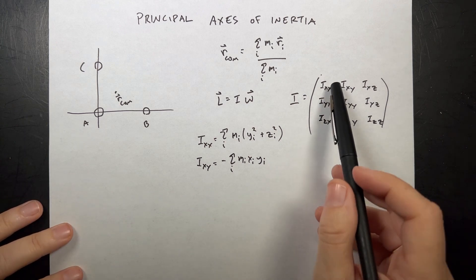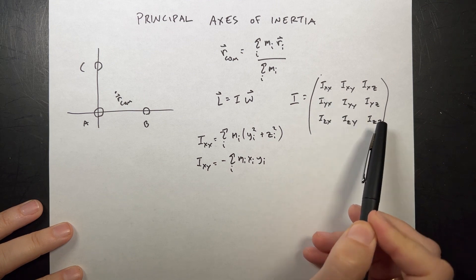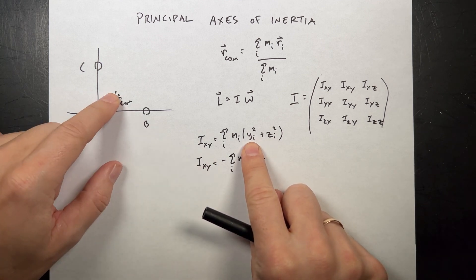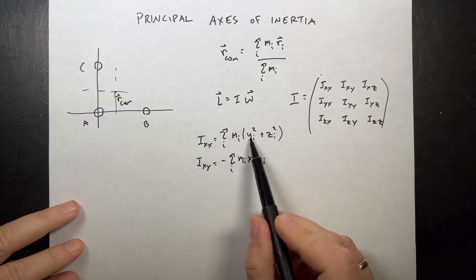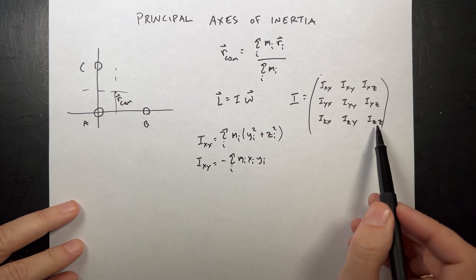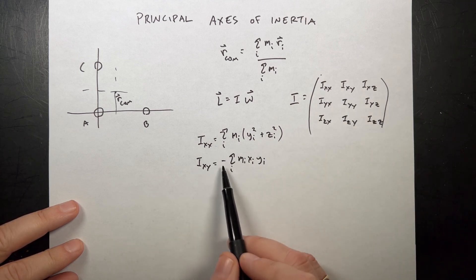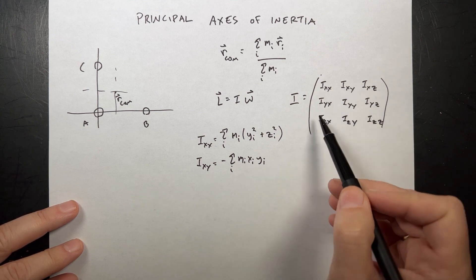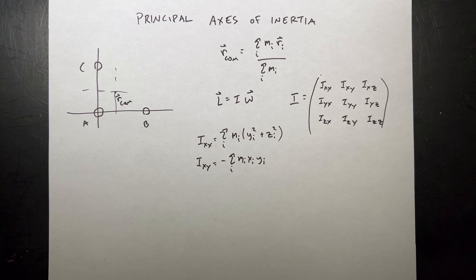Here's my inertia tensor: IXX, IXY, and so on. Any time I have double indices — XX, YY, ZZ — it's the sum of m_i times (y_i squared plus z_i squared) for the X component, and similarly for YY and ZZ. For the cross term XY, it's negative m_i times x_i times y_i, summed up. These cross terms are symmetric, so I only need to calculate six terms total. What we found was that in some cases the angular velocity and the angular momentum are in different directions — and that's a huge, huge point.